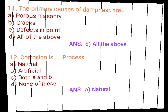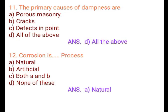Question 11: The primary causes of dampness are: A. Porous masonry, B. Crack, C. Defect in joint, D. All of the above. Answer: D. All of the above.